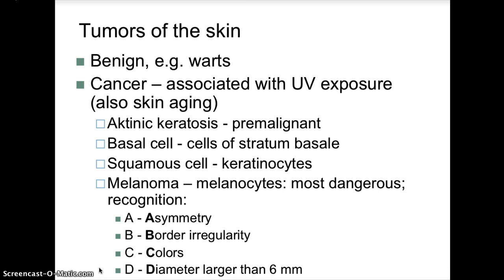There is the A, B, C, D to look for — four basic things when trying to detect melanoma. Asymmetry, border irregularity, colors, and diameter: whether the mole is greater than six millimeters.